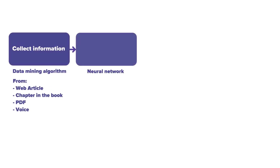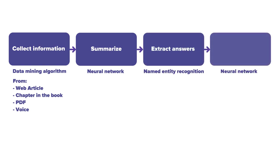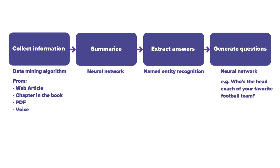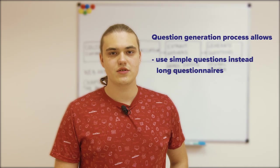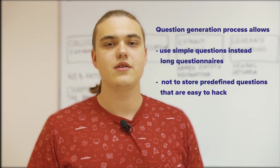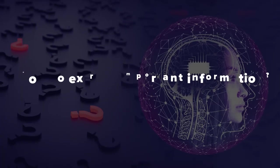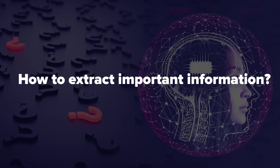Then, a trained neural network handles context and extracts answers by named entity recognition. After that, it automatically generates questions to ask. For example: who is the head coach of your favorite football team? This process allows not to annoy users with long questions, and not to store predefined questions that are easy to hack.